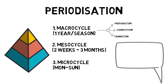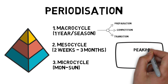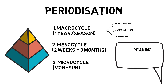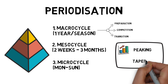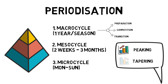Careful manipulation of these cycles allows for periods of peaking, which is when an athlete is at the height of physical and psychological conditioning, such as planning to peak at the Olympics or a big final. And tapering, which is a reduction in workload prior to a major competition, to enable the athlete to reach peak performance.